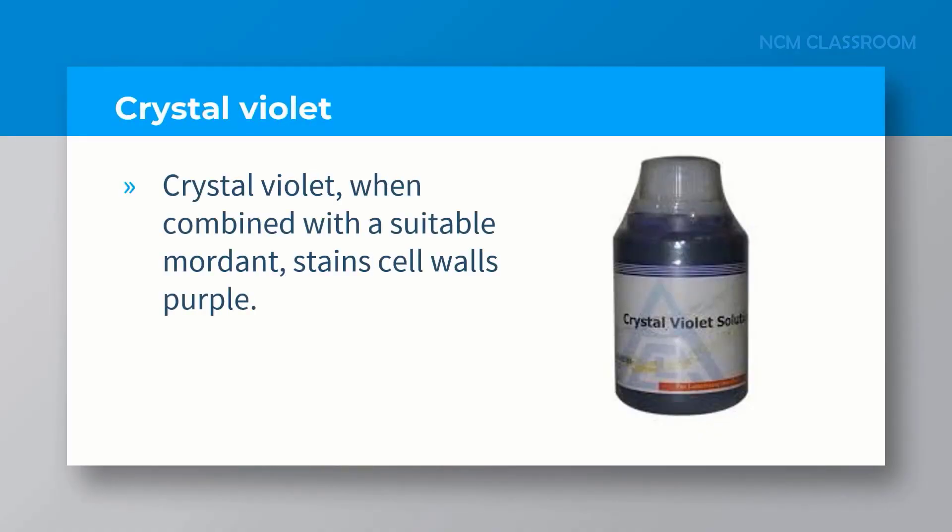Crystal violet solution, when combined with a suitable mordant, stains cell walls purple. Crystal violet is the stain used in Gram staining.